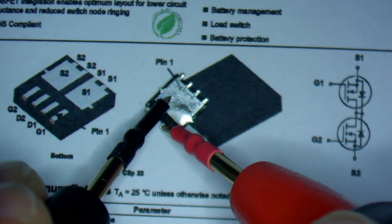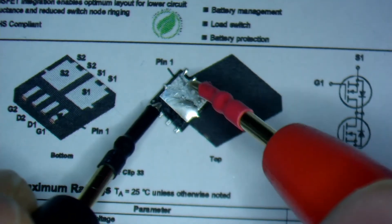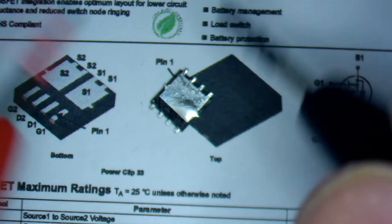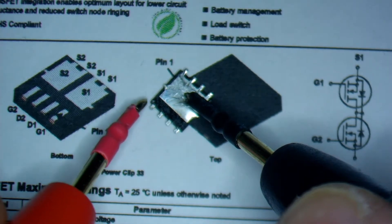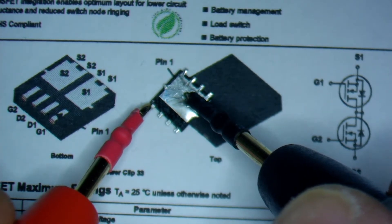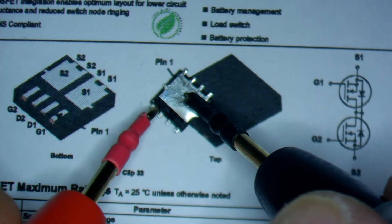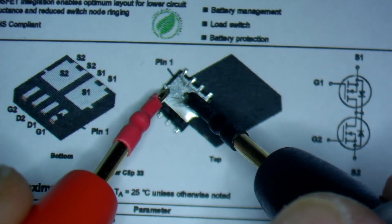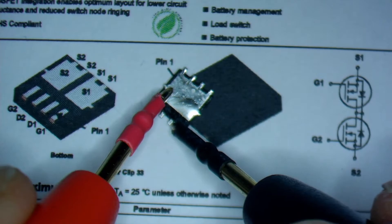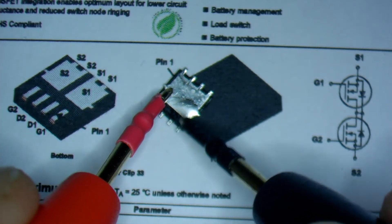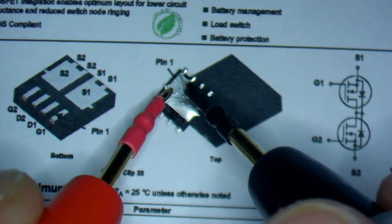Now we close the gate. So we put the black on source and red on gate. And now the MOSFET is closed. We don't have any connectivity. So both of the MOSFETs are actually absolutely fine.